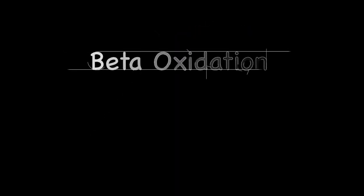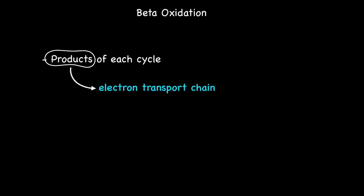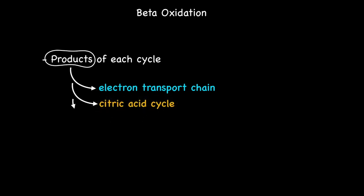Hi and welcome to another episode of Wonders of Chemistry with Mickey G. This is my third episode on beta-oxidation. In this episode I'll be focusing on how the products of each beta-oxidation cycle are linked to the electron transport chain, the citric acid cycle, and ketogenesis.